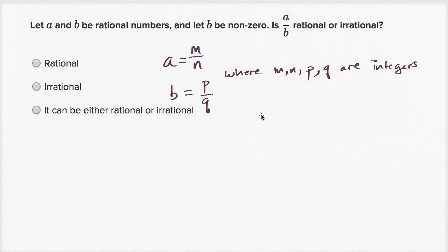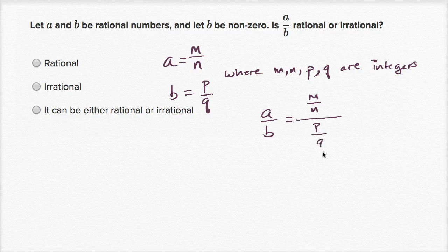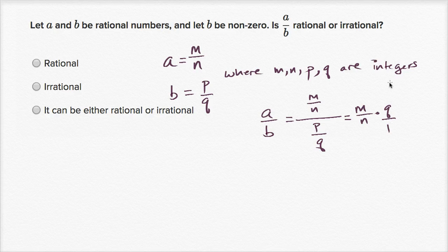So what is A over B going to be? A over B is going to be M over N over P over Q, which is equal to M over N times Q over P — because if I divide by a fraction, it's the same thing as multiplying by the reciprocal. That gives us MQ over NP.